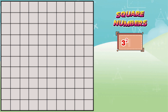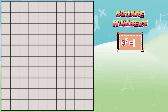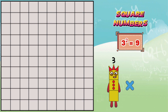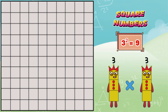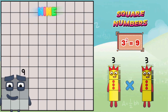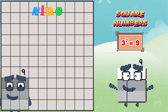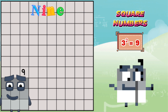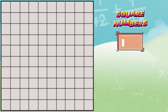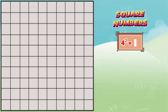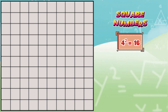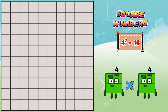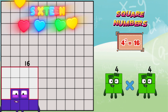Three squared is equals to nine, or three multiplied by three, is equals to nine. Four squared is equals to sixteen, or four multiplied by four, is equals to sixteen.